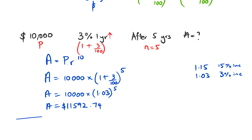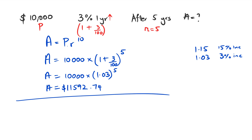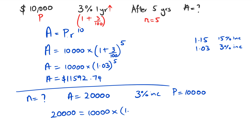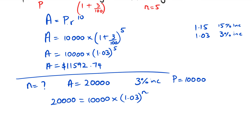However, we could use logs when the question is asked differently. For example: the starting money is still $10,000, but I want to know how long it's going to take to get to $20,000. The rate is still 3% increasing. So I write: 20,000 equals 10,000 multiplied by 1.03 to the power of n. This is where we're going to actually use logs.